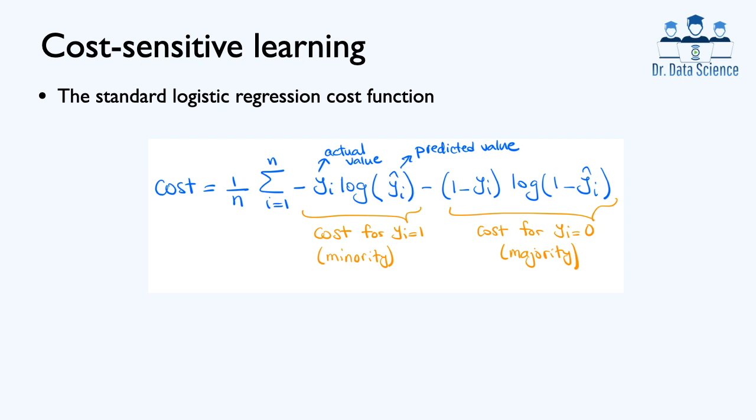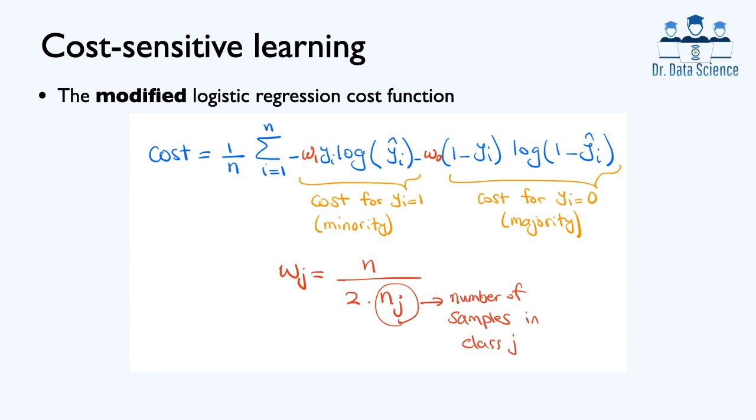Having that said, the total cost function for n training samples can be decomposed into two terms. One for the minority class with actual labels yi equal to 1 and the other one for the majority class with yi equal to 0. For the modified cost function, we define two class weights w1 and w0 to incorporate the significance of each class in the cost function. wj is defined as the total number of samples over the number of classes, which is two here, times the number of samples in each class j.